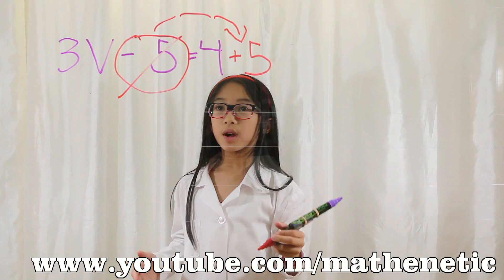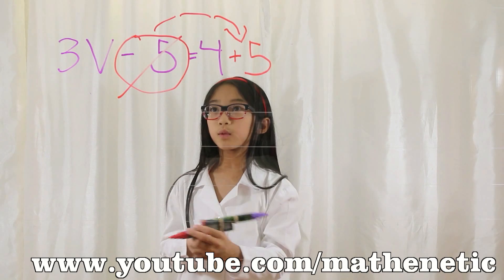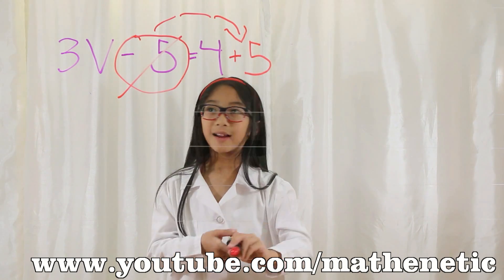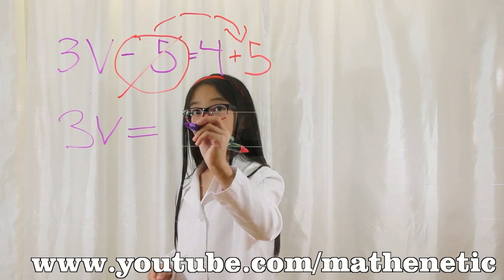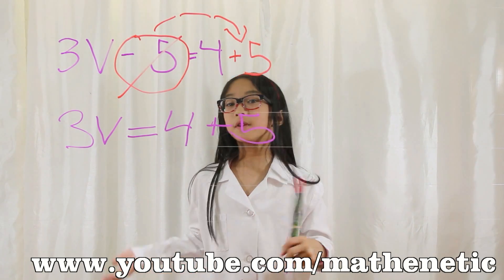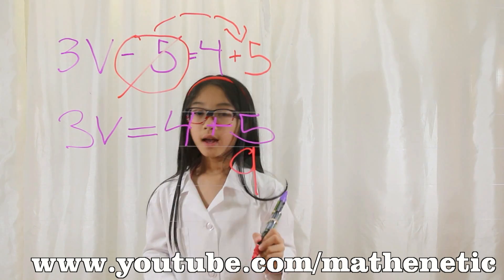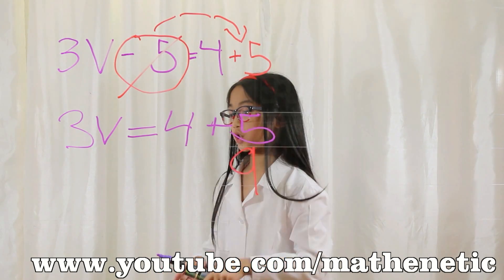Now if you rewrite the equation, the equation will look like 3v equals 4 plus 5. Well, 4 plus 5 is 9, and now you bring down the rest of the equation.